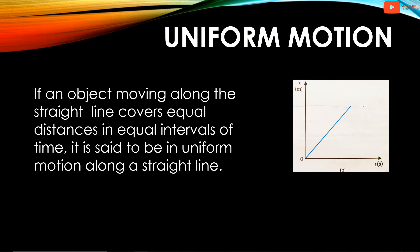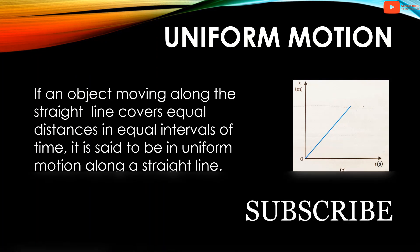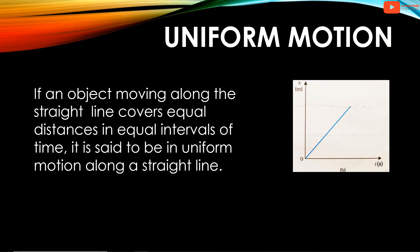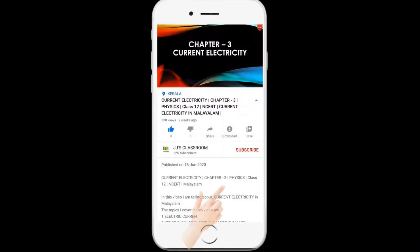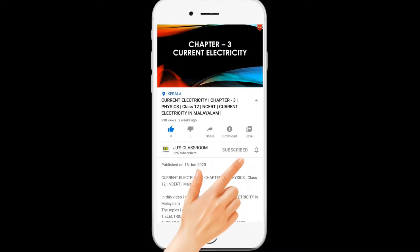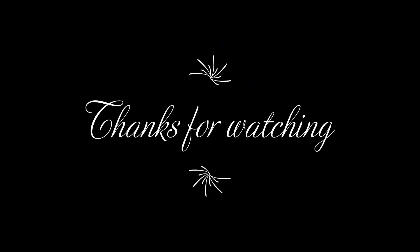Uniform motion: if an object moving along a straight line covers equal distances in equal intervals of time, it is said to be in uniform motion along a straight line. The position-time graph for an object in uniform motion can be seen on screen. For a stationary object, the position-time graph is a straight line parallel to the time axis.